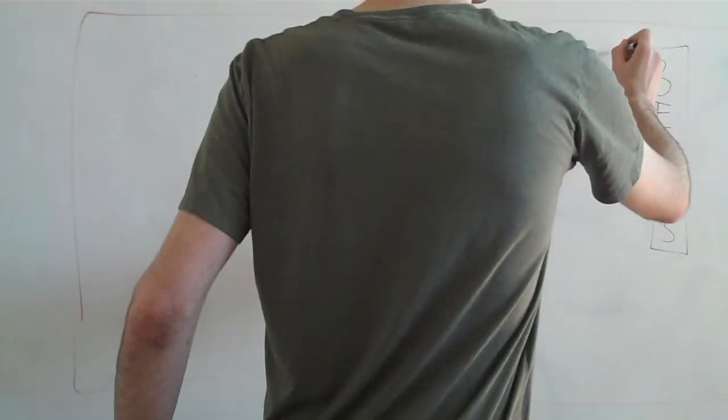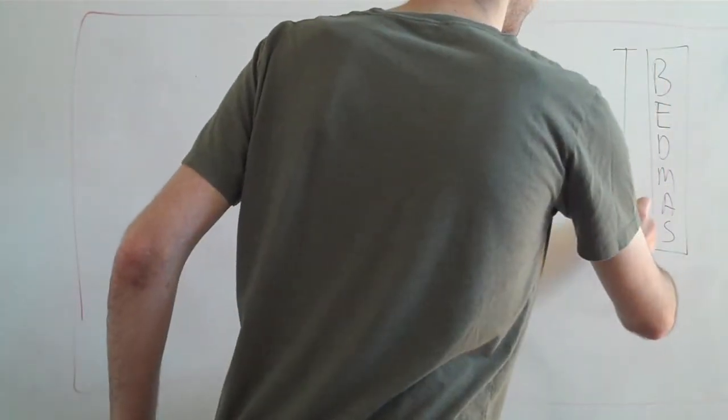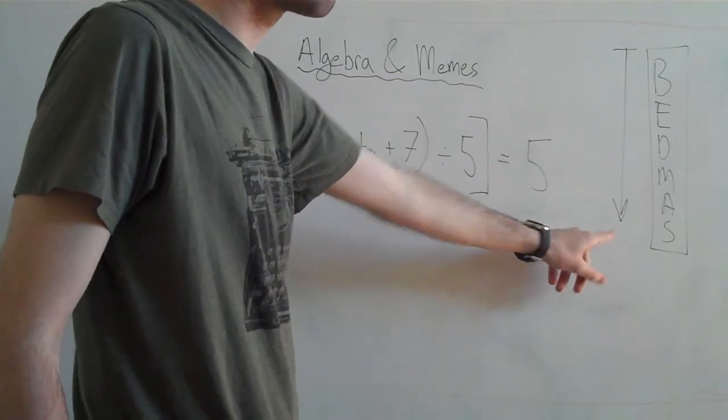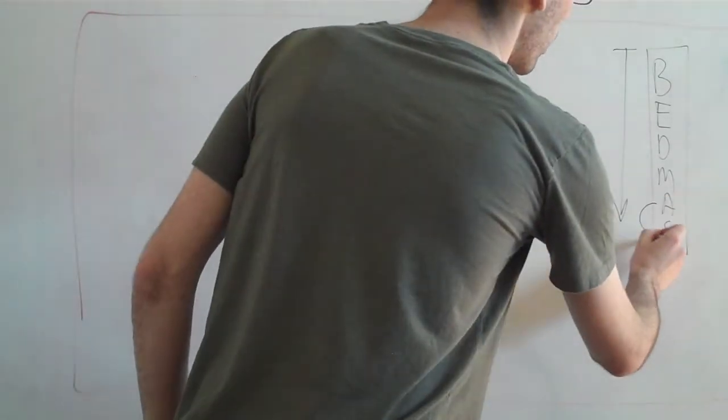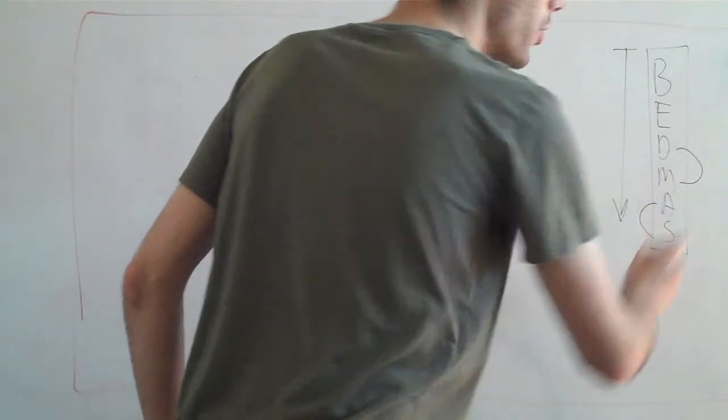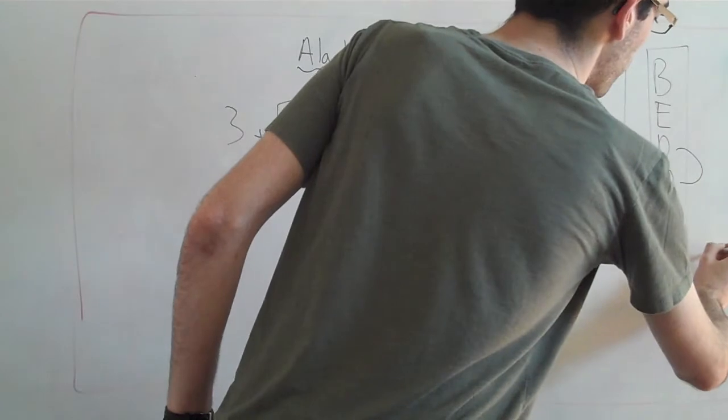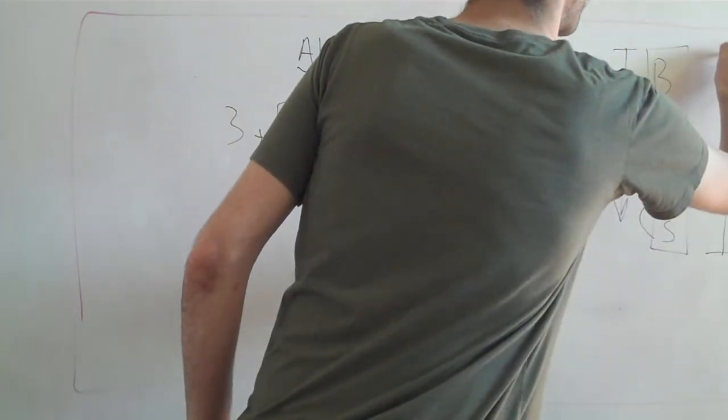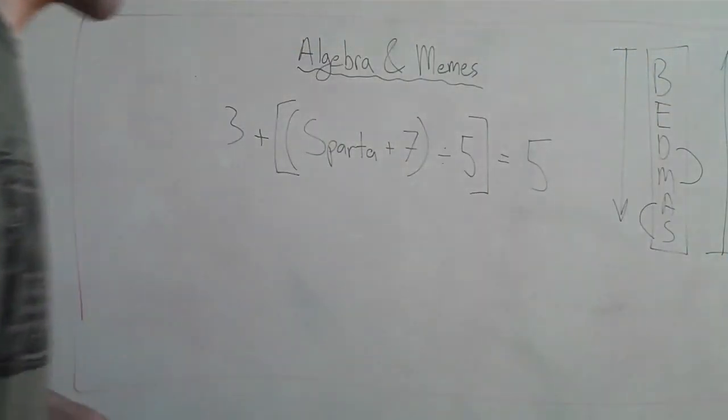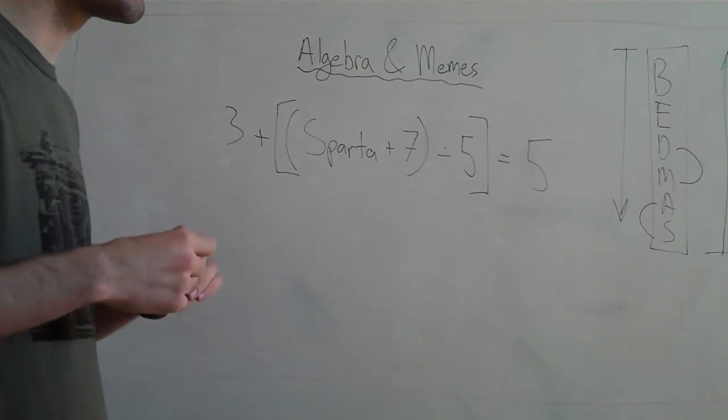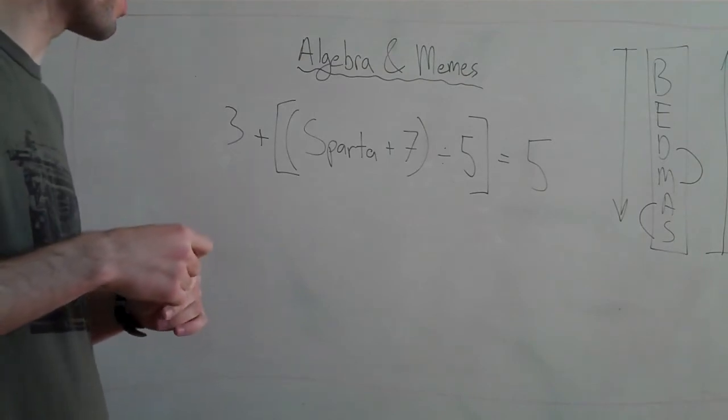Normally, we do BEDMAS from the top down. We start with brackets, we go all the way down to subtraction. Even though this one and this one, and this one and this one are kind of interchangeable. But now we're going to do BEDMAS from the bottom up. Or, if you want to call it, the switcheroo method. The switch up method. I like it.